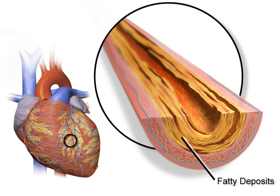Coronary artery disease, also known as ischemic heart disease, involves the reduction of blood flow to the heart muscle due to buildup of plaque in the arteries of the heart. It is the most common of the cardiovascular diseases. Types include stable angina, unstable angina, myocardial infarction, and sudden cardiac death.